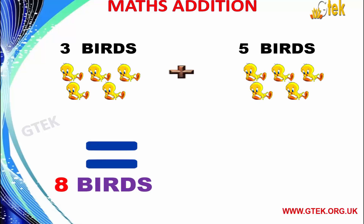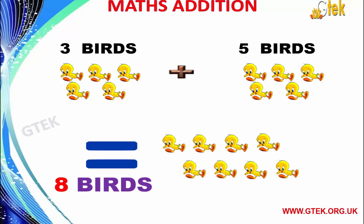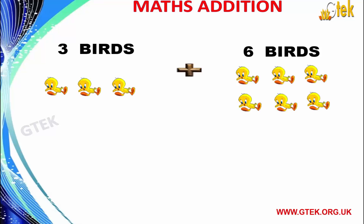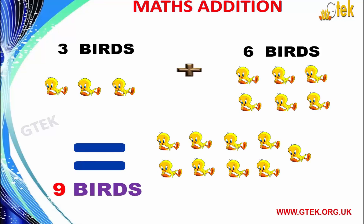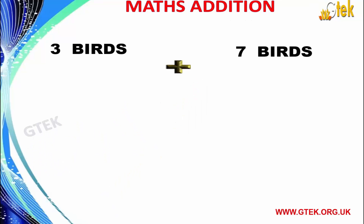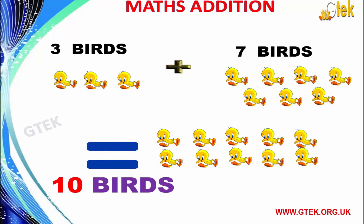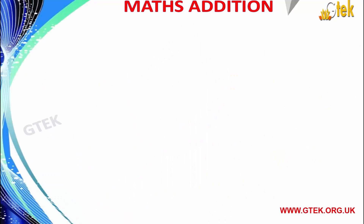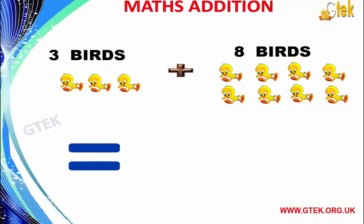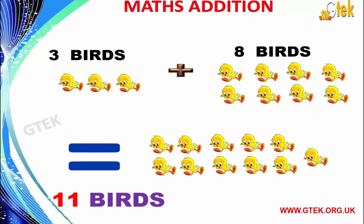3 birds plus 5 birds equals to 8 birds. 3 birds plus 6 birds equals to 9 birds. 3 birds plus 7 birds equals to 10 birds. 3 birds plus 8 birds equals to 11 birds.